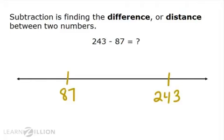Well, let's think about what we know. We know that on number lines, we count hops, not marks. We also know that there are some friendly numbers between 87 and 243. For example, 100 is a friendly number between 87 and 243. Let's hop from 87 to 100.